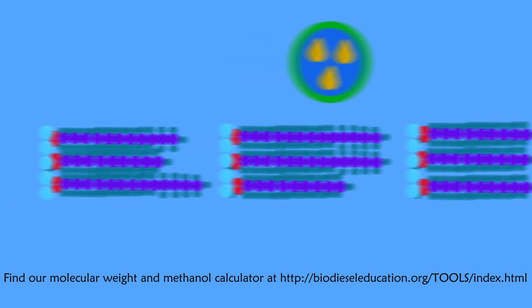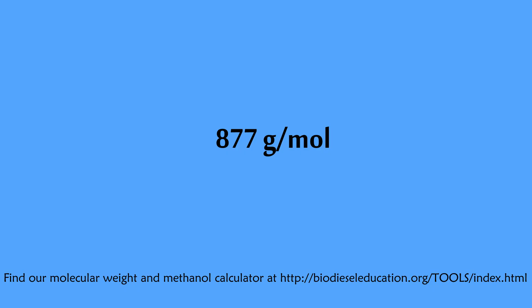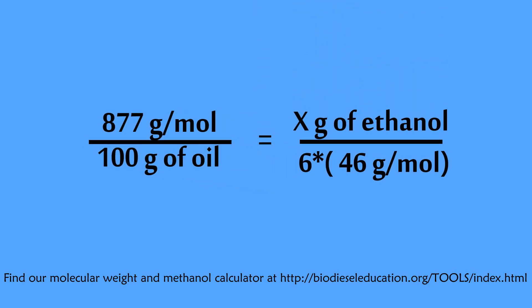For this exercise we will use a value of 877 grams per mole for canola. Since we are using 100 grams of oil, we can use the following relationship to calculate the ethanol needed for a 6 to 1 ratio of ethanol moles to triglyceride moles.